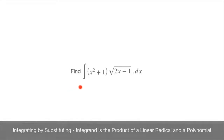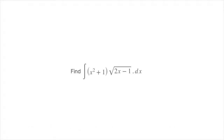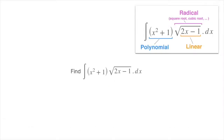Let's say we have to find the integral where we have to integrate a product of two functions. We can see that we have a polynomial, that's x squared plus 1, as well as a radical function inside of which we have a linear, 2x minus 1.